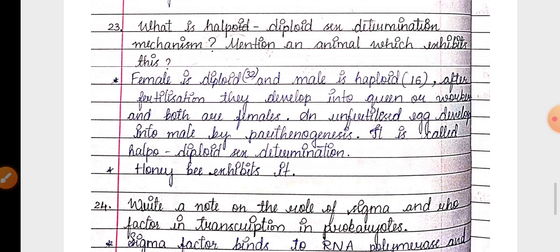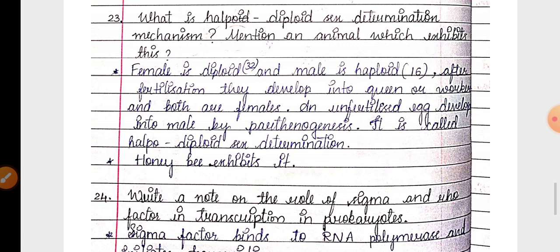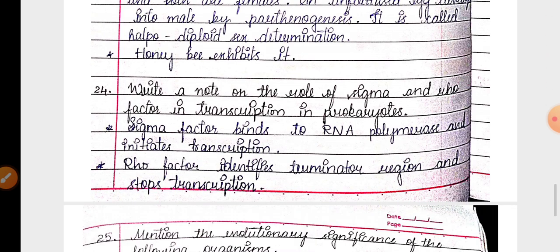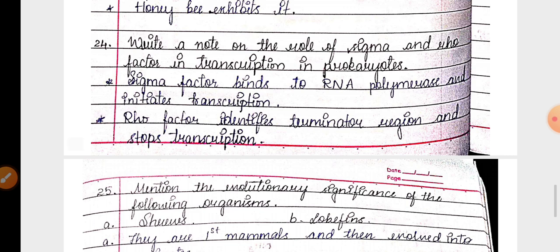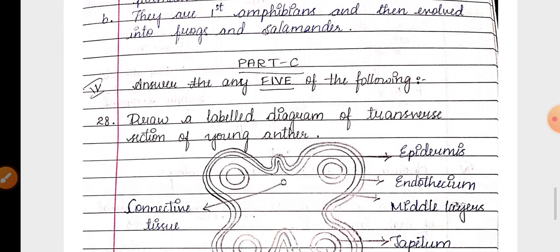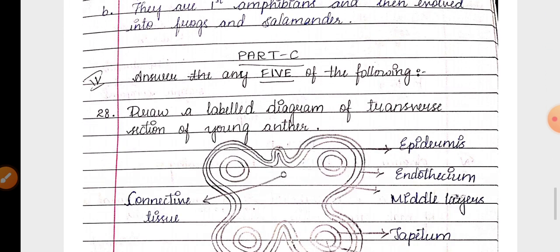Then next question is about honeybee sex determination, haplodiploid sex determination. Then about the question of transcription unit, sigma factor and rho factor function. Then the significance of rhipidistians and lobe fins in evolution.